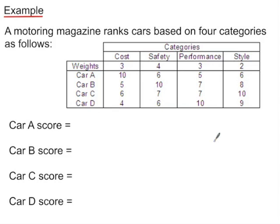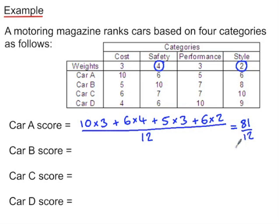Sometimes we use weighted means to give higher weighting to particular facets of the calculation. Here we have four cars ranked on cost, safety, performance, and style, but we give a higher weighting to safety and the lowest weighting to style. To work out the weighted mean for each car, multiply its score by the weight and divide by the total of all weights. For car A that gives a weighted mean of 6.75. Pause the video and rank the four cars by calculating the weighted means using the same method.